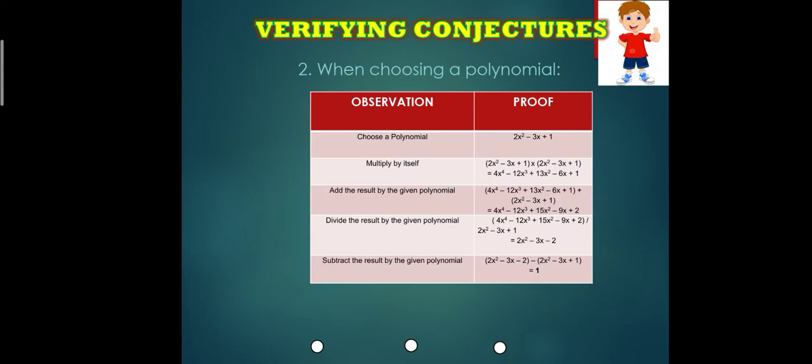Your answer will be 4X to the fourth minus 12X cubed plus 13X squared minus 6X plus 1. After that, you will add the given polynomial, which is the 2X squared minus 3X plus 1. And your answer will be 4X to the fourth minus 12X cubed plus 15X squared minus 9X plus 2.